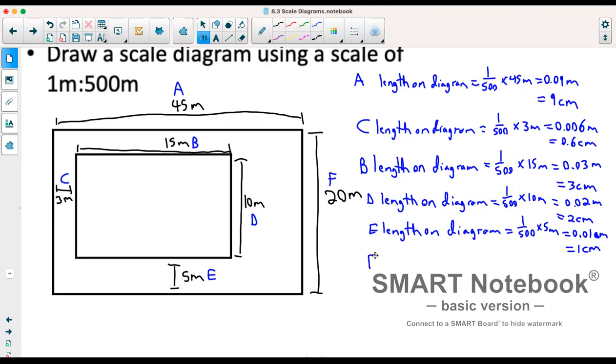Okay, F is our last dimension. So our length on diagram would be 1 over 500 times 20 meters. So that's 0.04 meters.